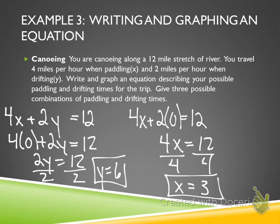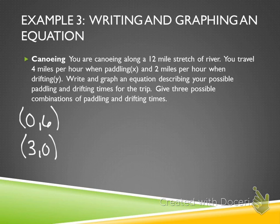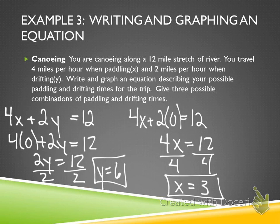The problem asks for three possible combinations of paddling and drifting times. We already have two from the intercepts: (0, 6) and (3, 0). Once we graph the line, we pick another ordered pair the line passes through — they chose (2, 2) since it passed through that point. That's everything for lesson 8.3.